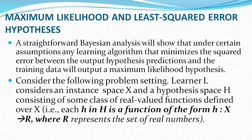According to Bayesian analysis, under certain assumptions any learning algorithm will minimize the squared error between the output hypothesis predictions and the training data, and also outputs the maximum likelihood hypothesis. That means according to Bayesian learning analysis, any algorithm can minimize the squared error. We need to understand what assumptions and notations are required to get the maximum likelihood hypothesis with the minimum squared error.